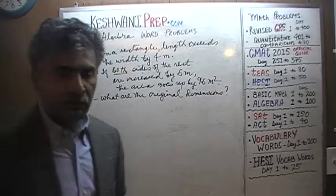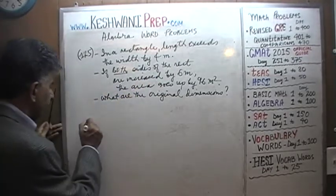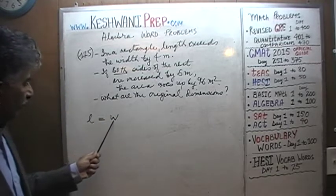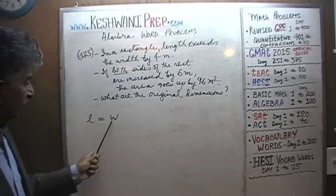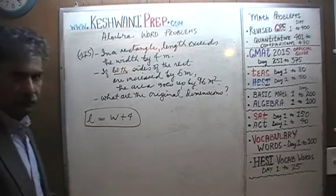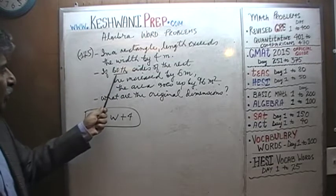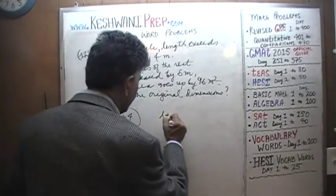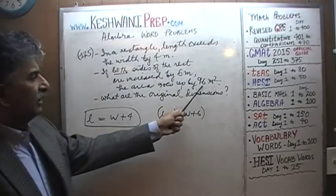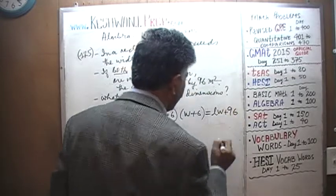Again, we need 2 equations because we have 2 unknowns — the length and the width. The two equations come from the two sentences. The first sentence: the length exceeds the width by 4 meters. The length does not equal width — whatever the width is, the length is 4 meters more than that. So L equals W plus 4. The second: if both sides increase by 6 meters, the area goes up by 96 square meters — so the new area equals LW plus 96.